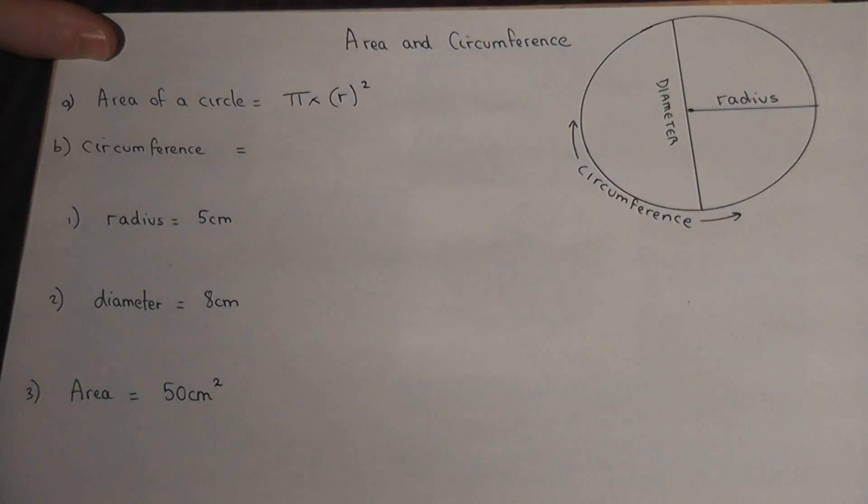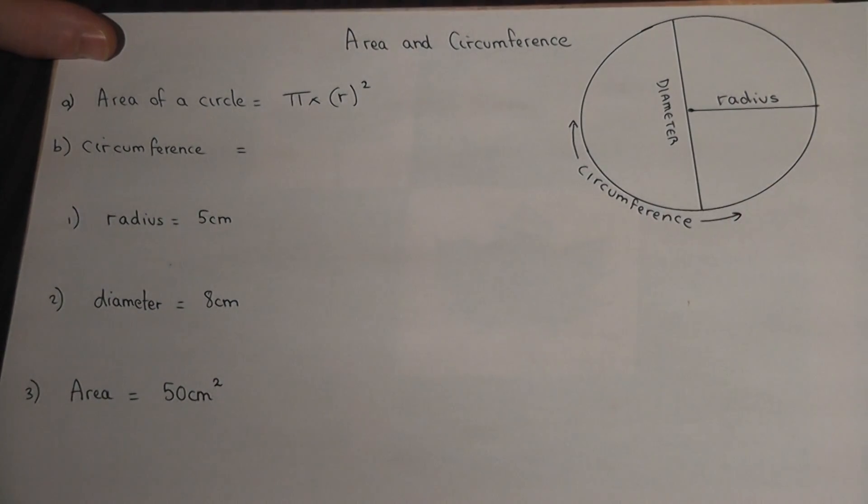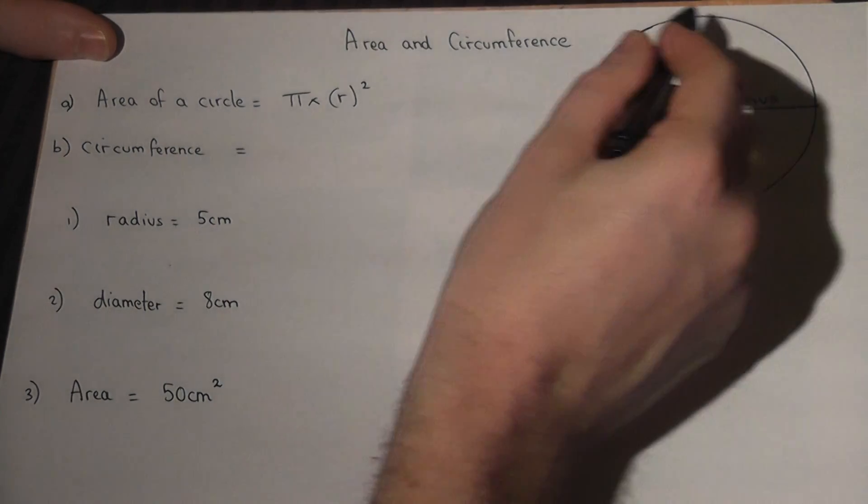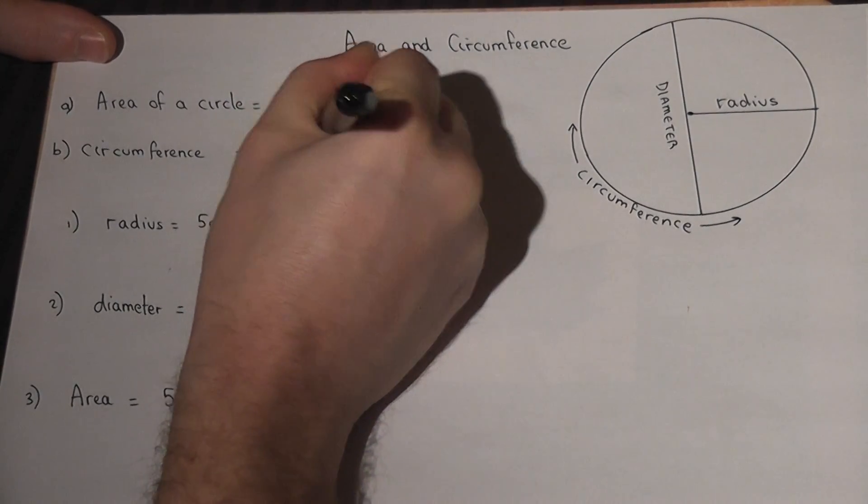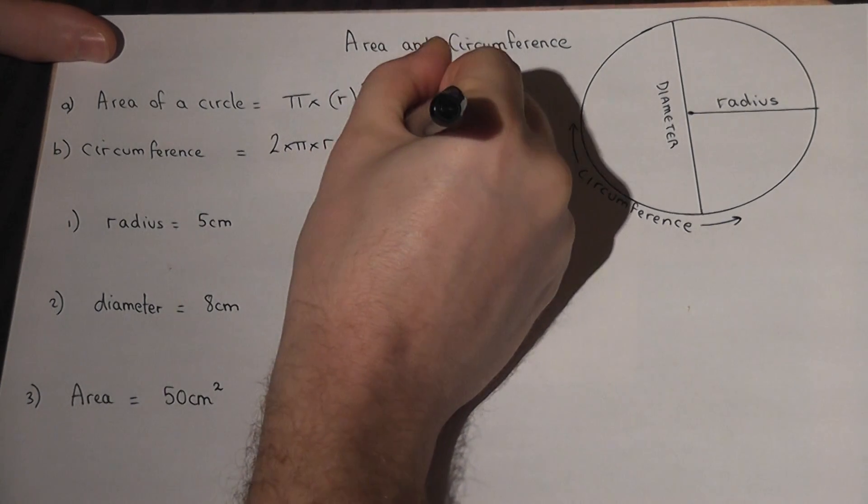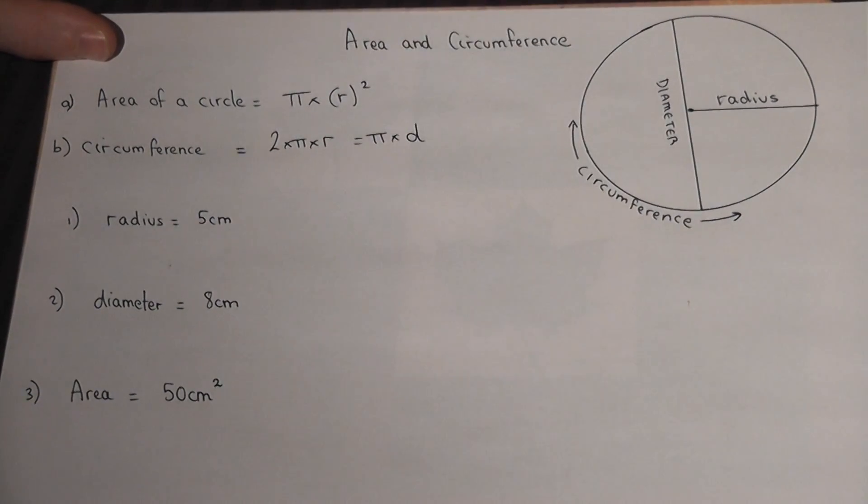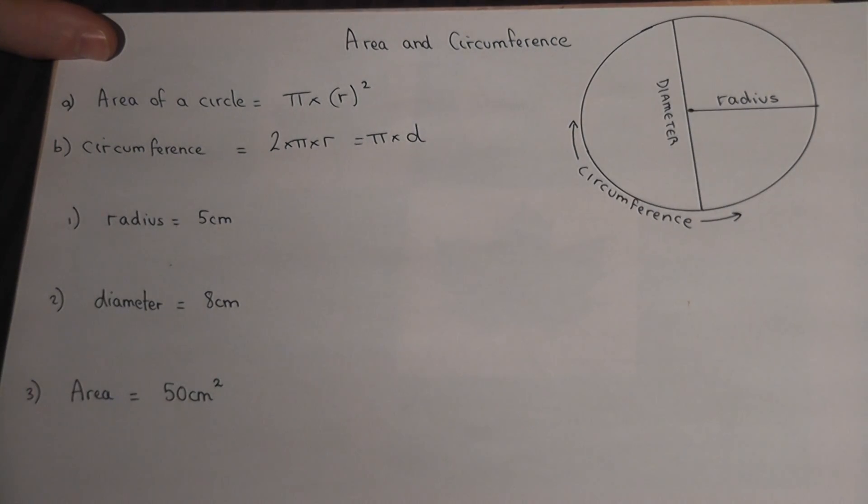The radius is the distance from the center to the outside of the circle. If you want the length around a circle, or the circumference, that is given by 2 times π times radius, or π times diameter, where the diameter is the full distance across the circle.